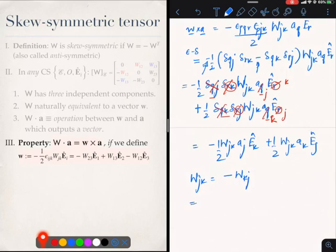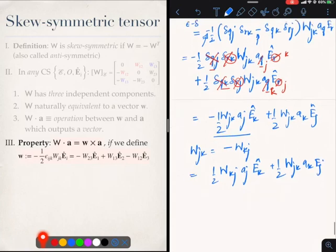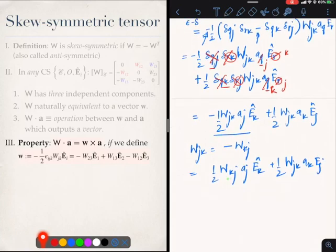And we will get half W_kj a_j e_k plus half W_jk a_k e_j. Now what you see is that k and j are all dummy indices. So in the first term I am going to swap k and j. And I will get half W_jk a_k e_j and the same thing.